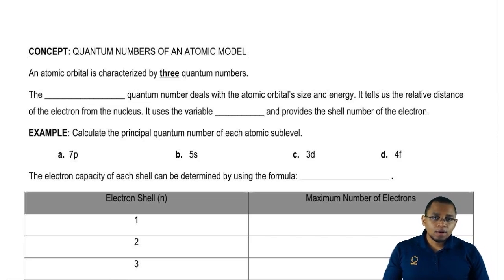The fourth quantum number doesn't talk about the electron or atomic orbital at all. It talks about the spin of the electron, so that's why we're not talking about the fourth quantum number just yet.